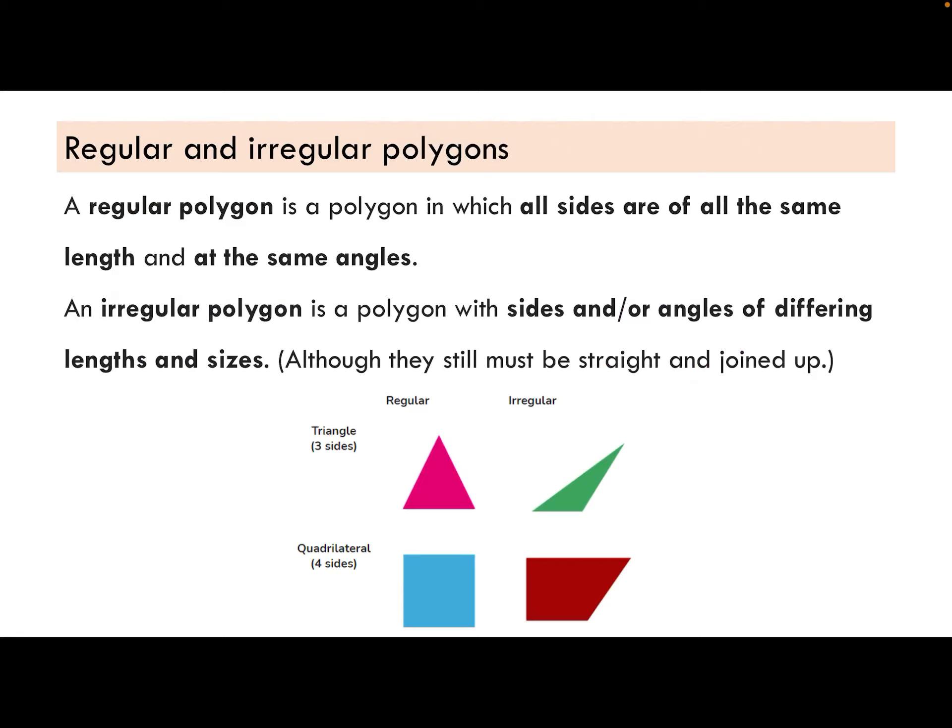We can break out any regular polygons. So a regular polygon is a polygon in which all sides are of the same length and therefore they must have the same sized angles. All sides are of the same length.